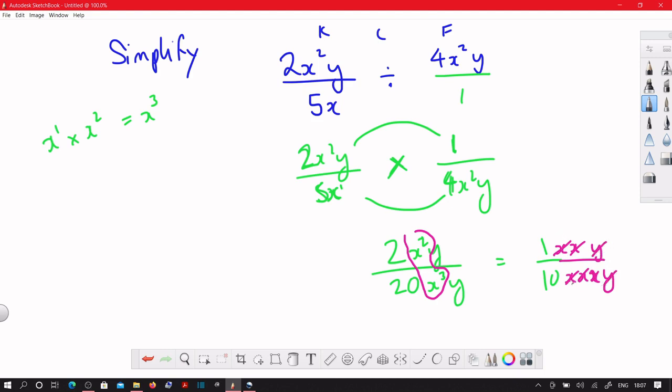So we've got x, x, y, x, x, y. That cancels. So we're left with 1 over, remember everything else, all the other letters are cancelled. 1 over 10. And then the only letter that wasn't cancelled is this x over here. That is the answer.